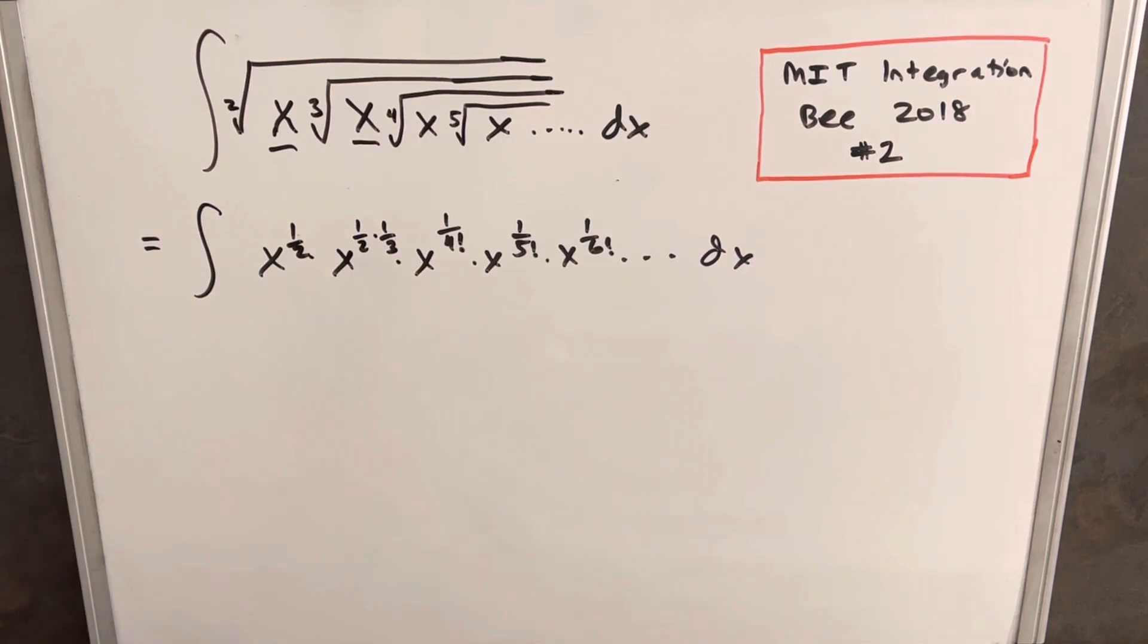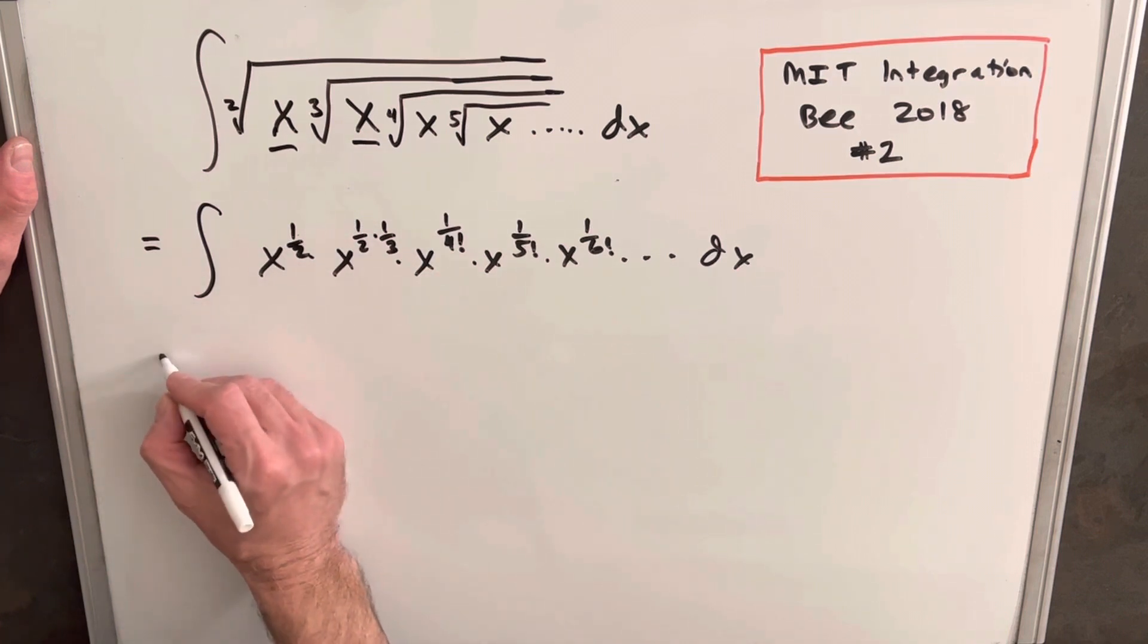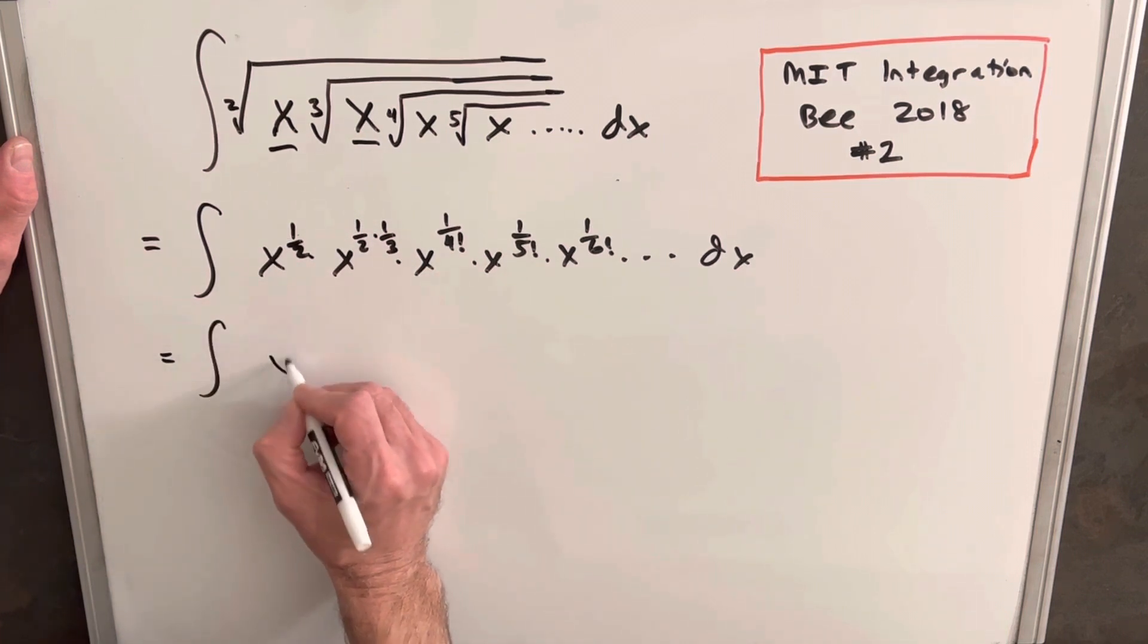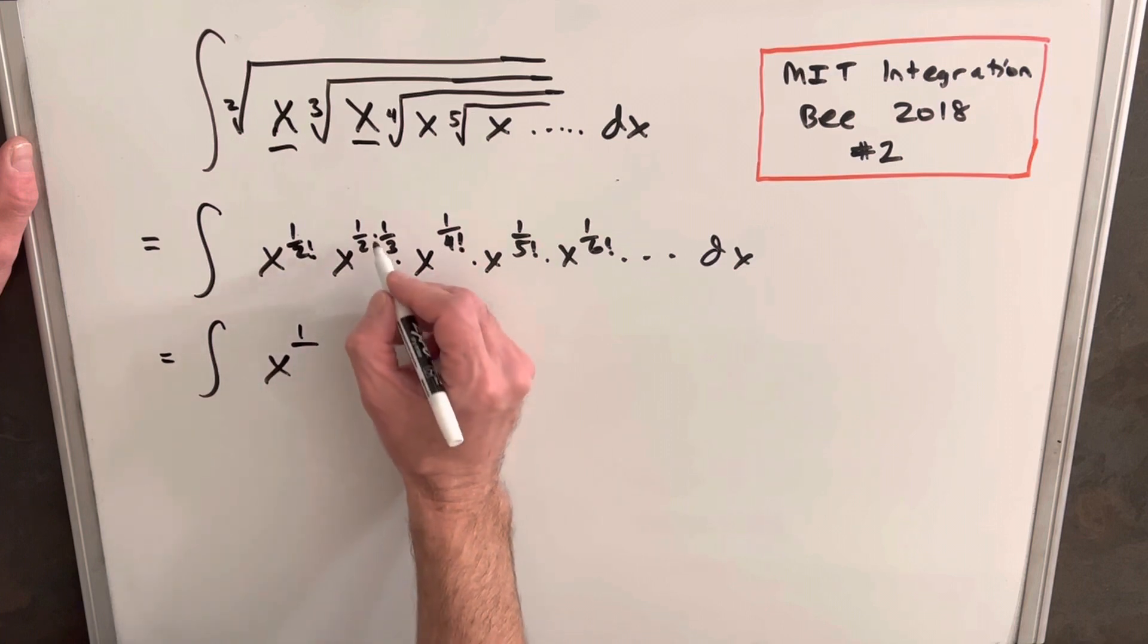Great. Now the convenient thing about that is when we multiply this together, we're just adding exponents. So we can kind of boil this down to just a single term of x, but then we're going to have this crazy exponent that's going to be, now we can write this as one over two factorial.